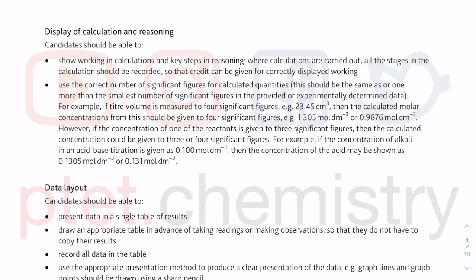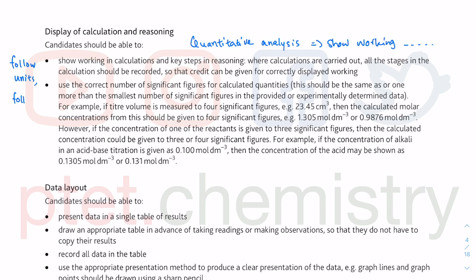Display your calculations and reasoning. This is very important in quantitative analysis — something to do with the numbers. Please, whatever you do, do not come up with magic numbers — show your working. Examiners are not trying to penalise you; they try to give you the marks. Show your working so that you can follow the units. Follow the units, do not make any mistakes, follow the math. And do not write an equals sign unless you mean it — equal means equal, so only use it when the left-hand side truly equals the right-hand side.